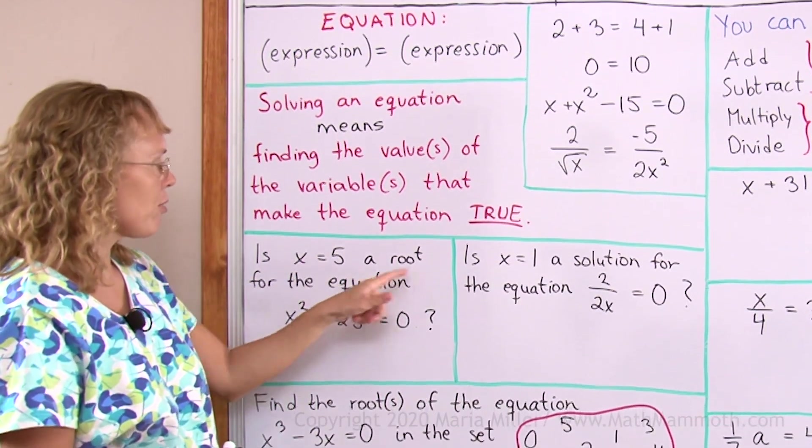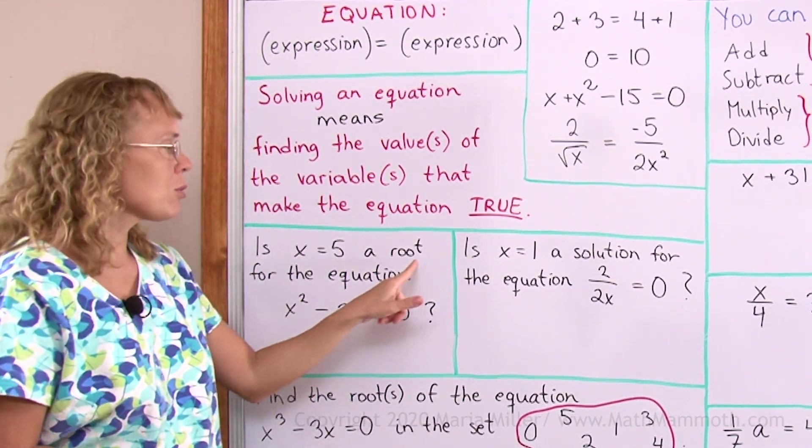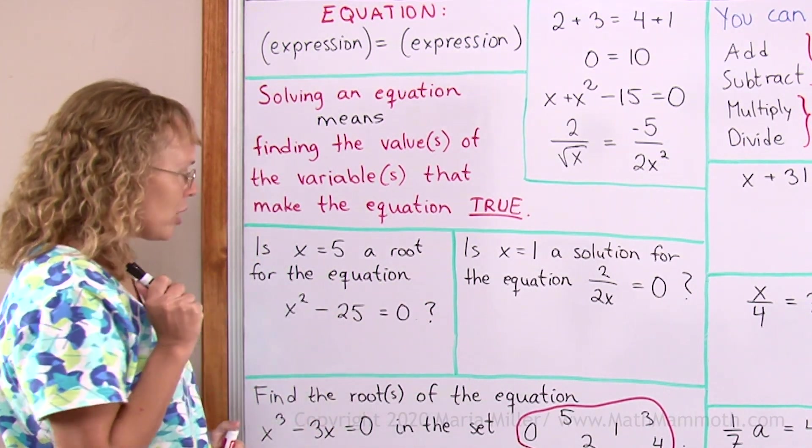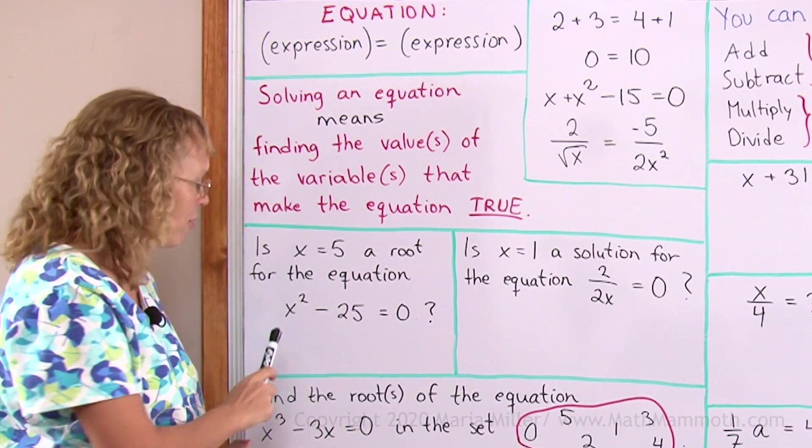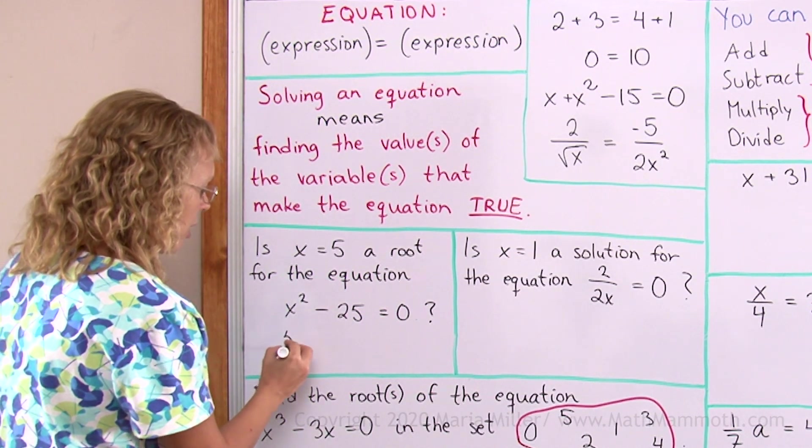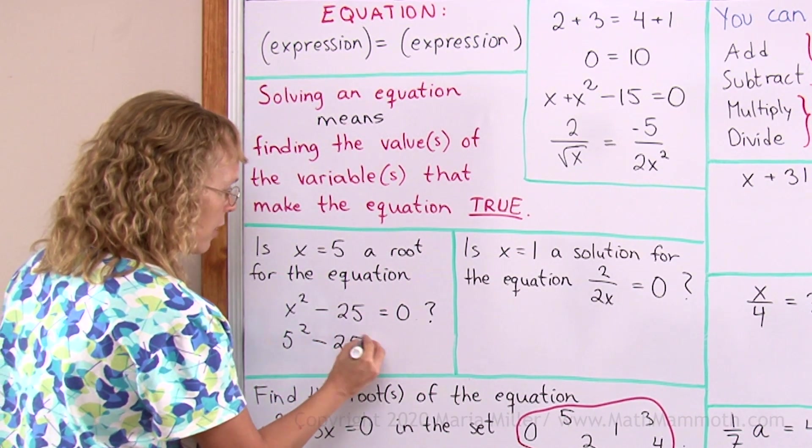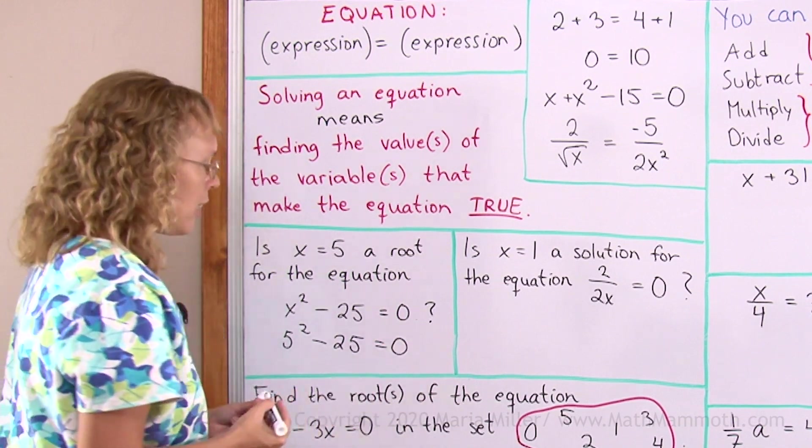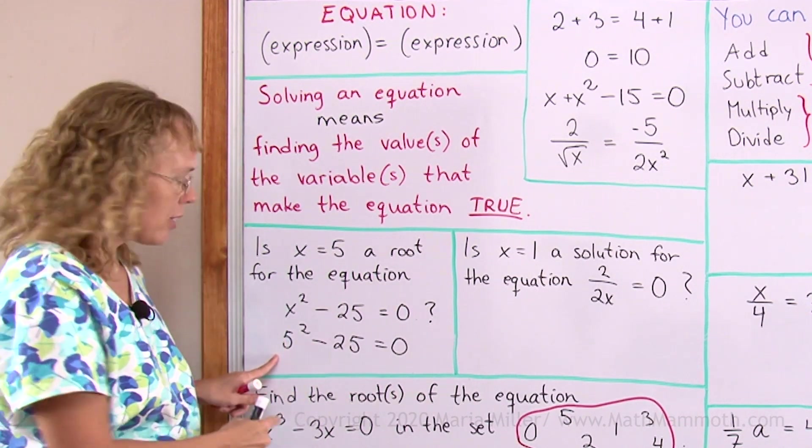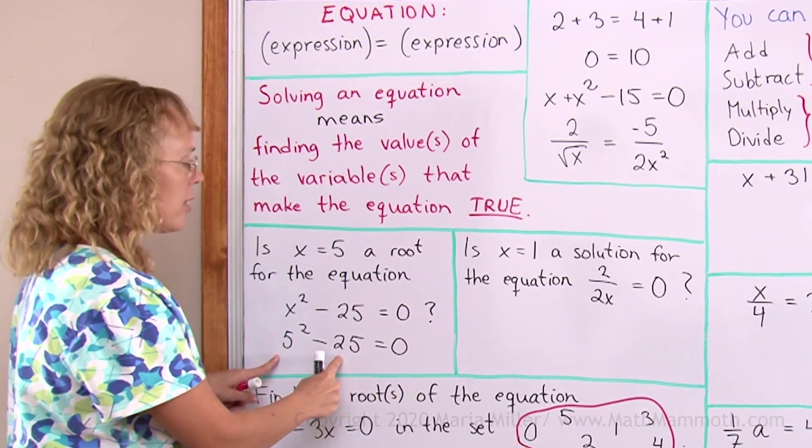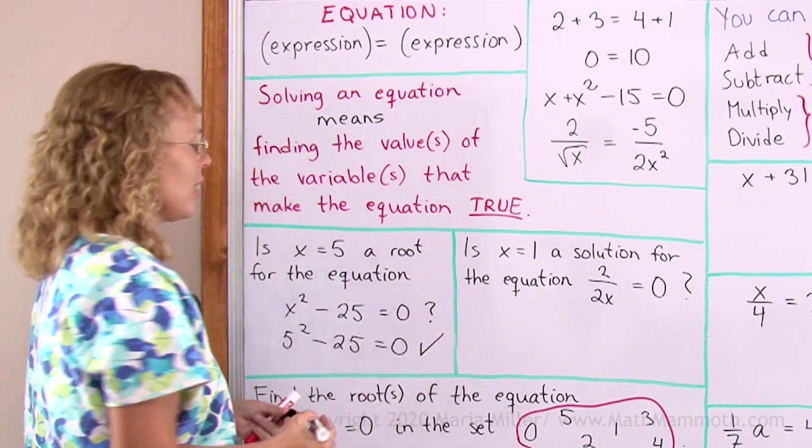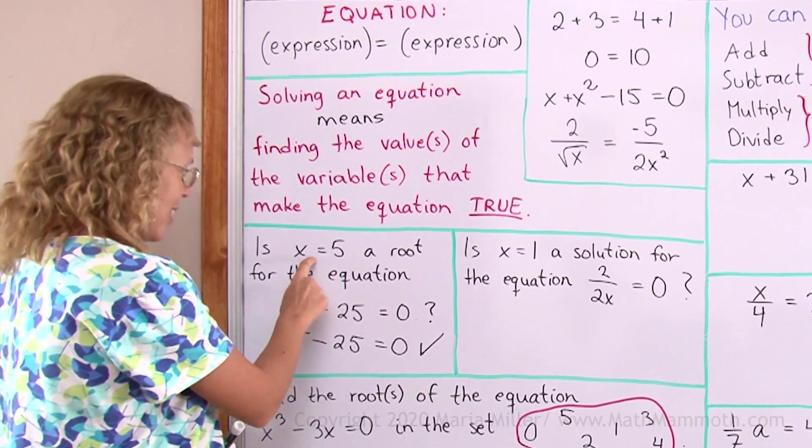Now is x equals 5 a root for the equation here? Root is another word for solution. But to check this is very simple. I just substitute 5 in place of x here. So I write this equation 5 squared minus 25 equals 0. And I calculate this expression here on the left side. 5 squared is 25. 25 minus 25 is 0. So it is 0 here and 0 on the other side. So yes, the equation checks. It is a root.